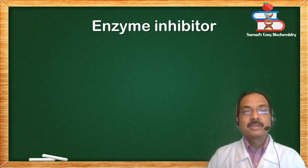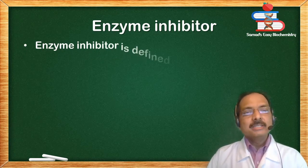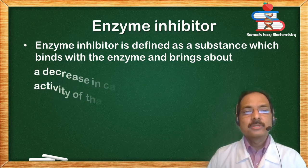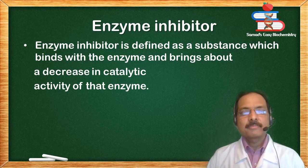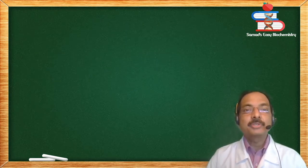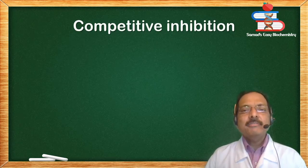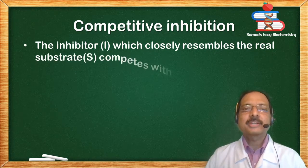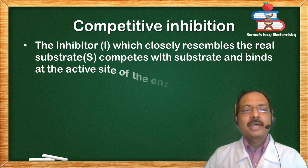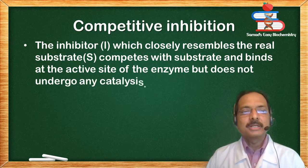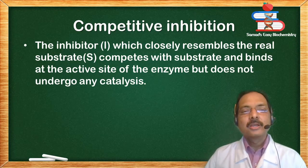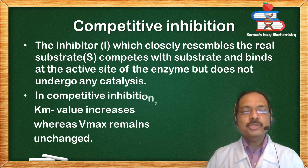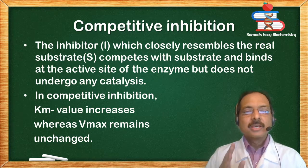Enzyme inhibitor: defined as a substance which binds with the enzyme and brings about a decrease in catalytic activity of that enzyme; the process is called enzyme inhibition. Competitive inhibition: the inhibitor I, which closely resembles the real substrate S, competes with the substrate and binds at the active site of the enzyme but does not undergo any catalysis. The inhibitor competes with the substrate in binding to the active site. In competitive inhibition, Km value increases whereas Vmax remains unchanged.